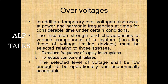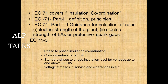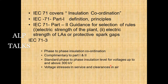The insulation strength and characteristics of all system components, including voltage-limiting devices, must be selected in relation to those stresses to reduce supply interruption frequency and component failures. The selected voltage level shall be low enough to be economically acceptable. IEC 71 covers insulation coordination: Part 1 gives definitions and principles; Part 2 gives guidance on selection rules and electric strength of protective spark gaps; Part 3 covers phase-to-phase insulation coordination, standard phase-to-phase insulation levels for voltages up to and above 300 kV, voltage stresses in service, and clearances in air.